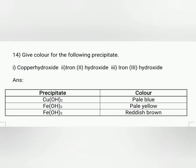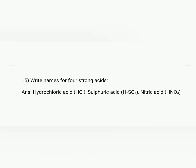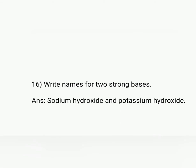Copper hydroxide gives a pale blue precipitate, iron(II) hydroxide gives a pale yellow precipitate, and iron(III) hydroxide gives a reddish-brown precipitate. Name four strong acids: hydrochloric acid, sulfuric acid, nitric acid, and perchloric acid (HClO4). Write names of two strong bases: sodium hydroxide (NaOH) and potassium hydroxide (KOH).